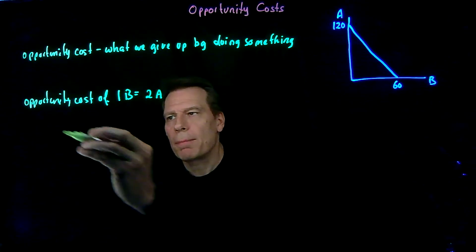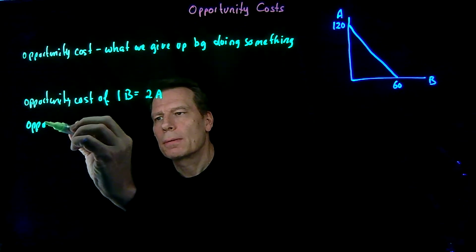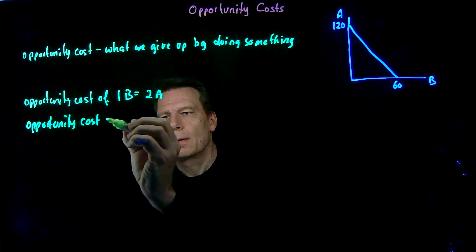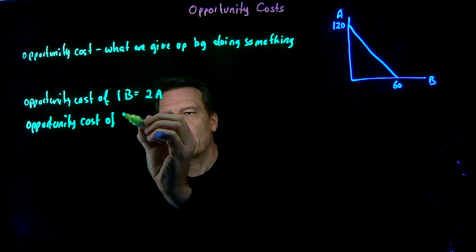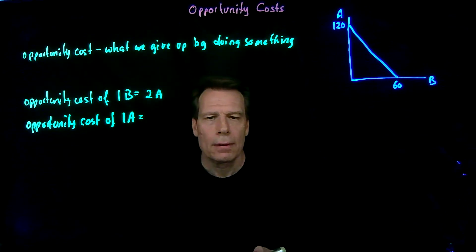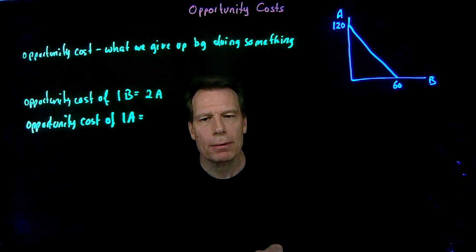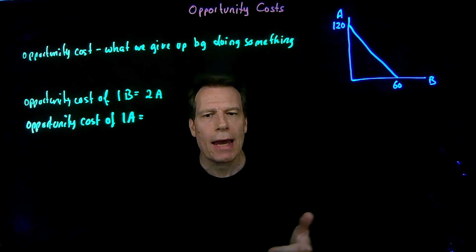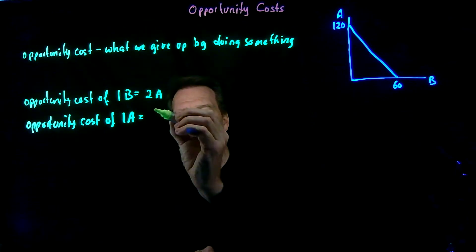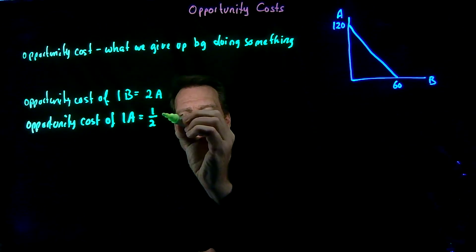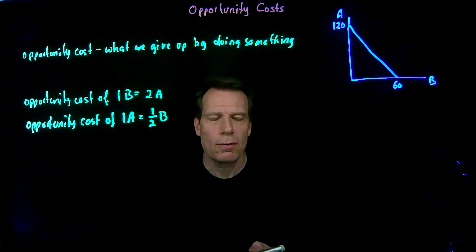What about the opportunity cost of one apple? Well, we're twice as productive at producing apples as we are at producing bananas. So every time we produce an additional apple, we give up producing half a banana. The opportunity cost of producing one apple is one half of a banana.